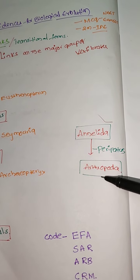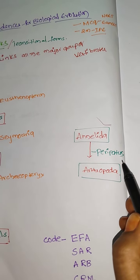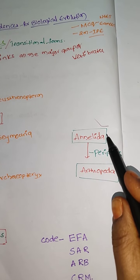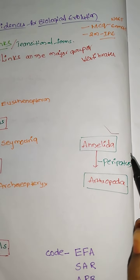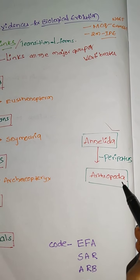Here one more invertebrate connecting link is there. That is Peripatus. It is the connecting link between the Annelida and Arthropoda. It has some Annelida characters, some Arthropod characters.